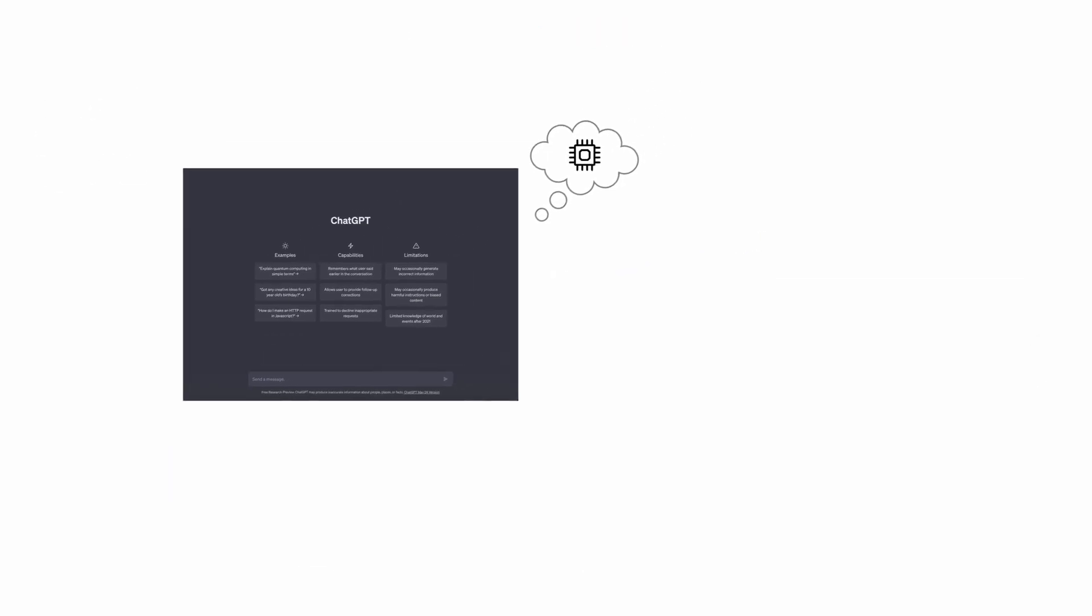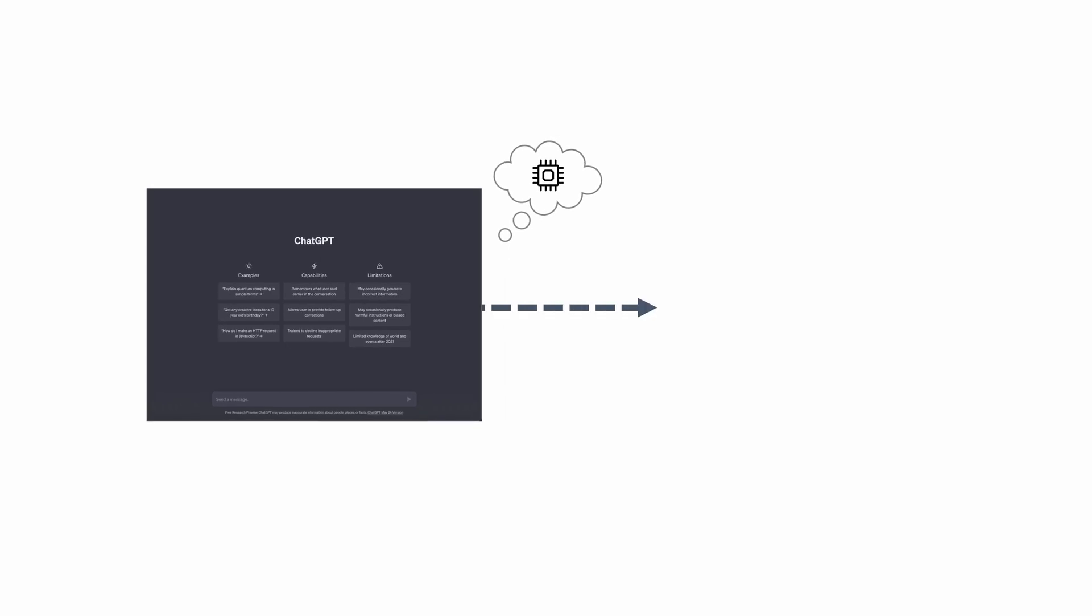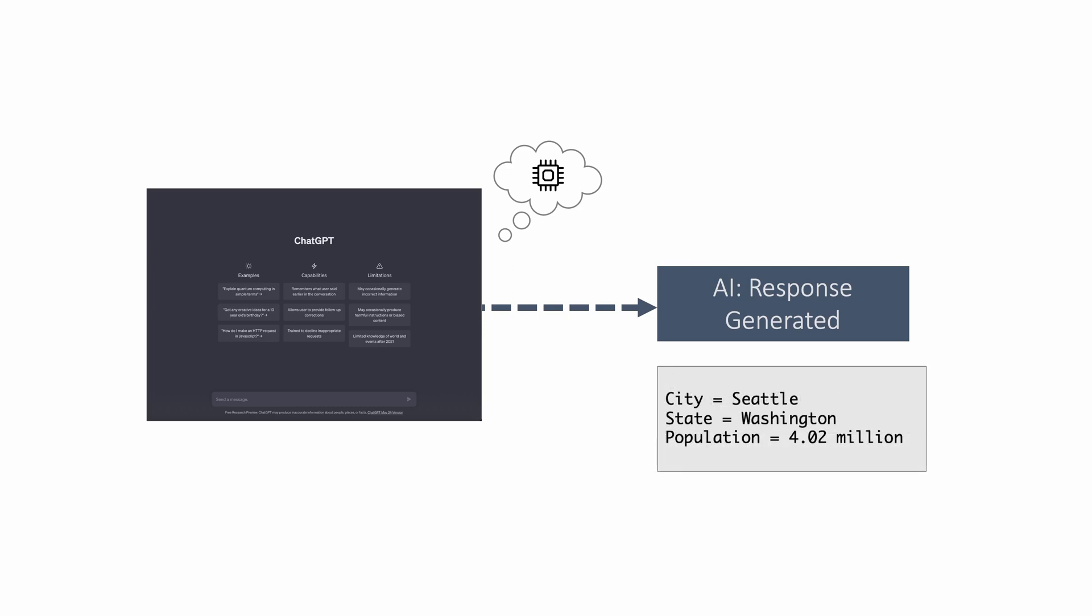And what if we want our application to generate a response in a way that we could use it downstream? So maybe we want in a JSON format, or we want in a particular format. To do that, there is something called output parsers. Output parsers make sure that the response from the LLM is in a certain format, which could be then used downstream.